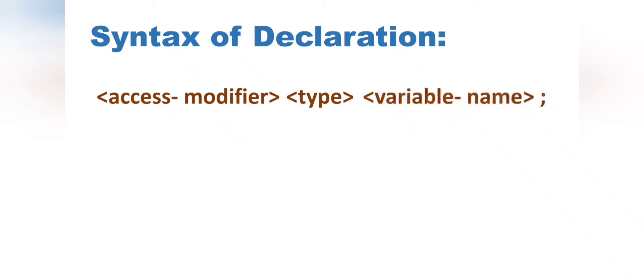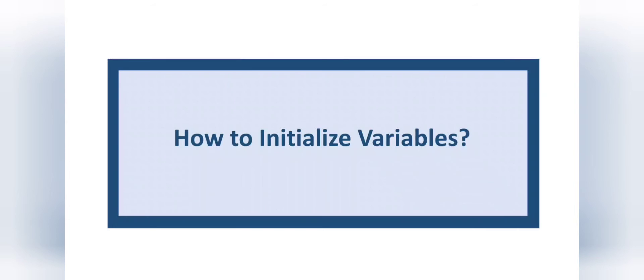The semicolon is important at the end of each statement in Java because it shows the compiler where one statement ends and where the next begins. So to declare a variable we write the access modifier — for example public — then the data type — for example int — and then the variable name — for example var1.